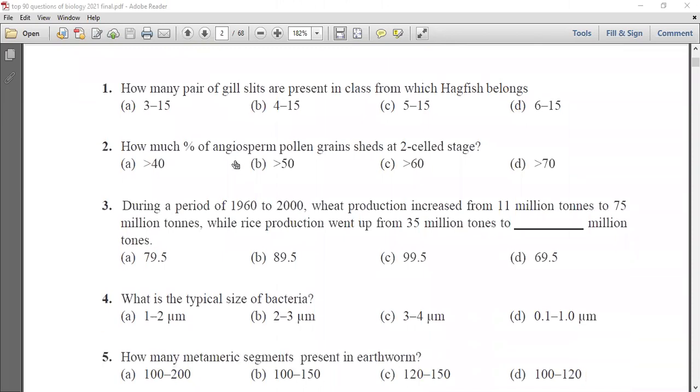First question: how many pairs of gill slits are present in class from which half fish belong? The options are 3 to 15, 4 to 15, 5 to 15 and 6 to 15. The correct answer is 6 to 15. Next question: how much percentage of angiosperm pollen grains sheds at 2 cell stage? Greater than 40, 50, 60 or 70. The correct answer is greater than 70.